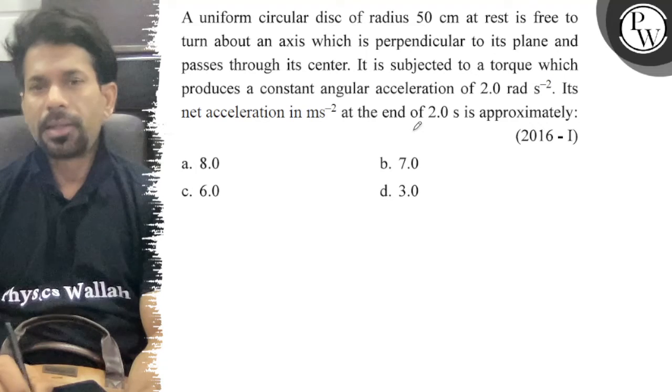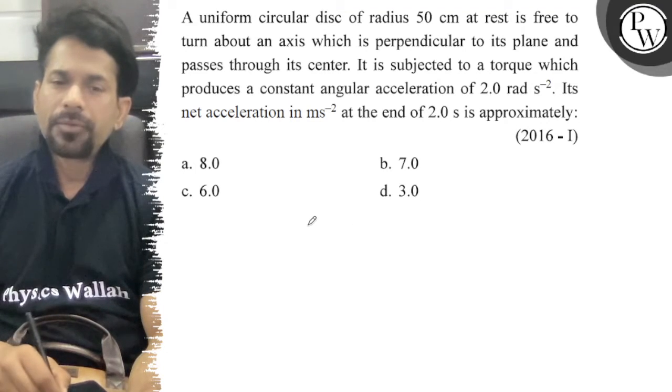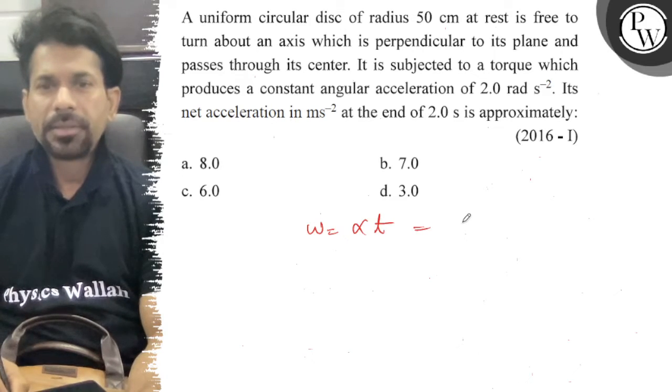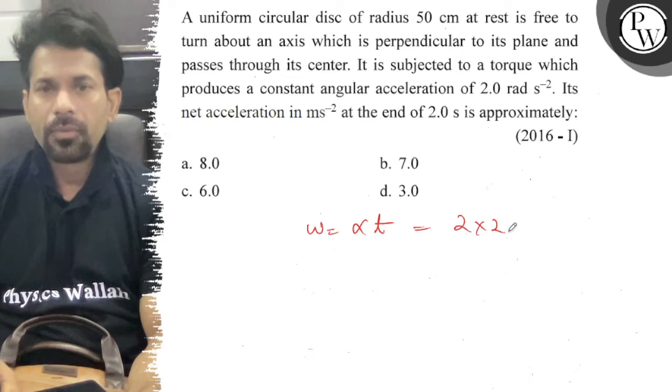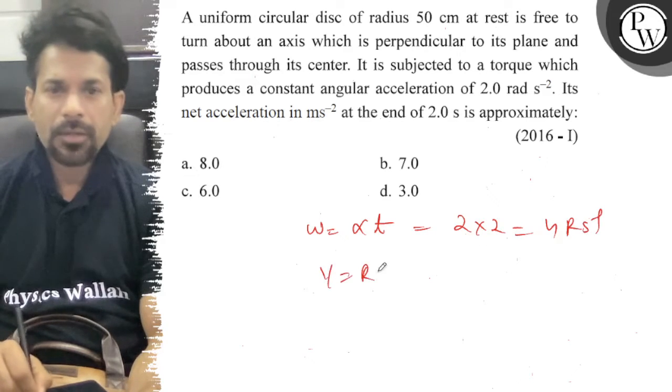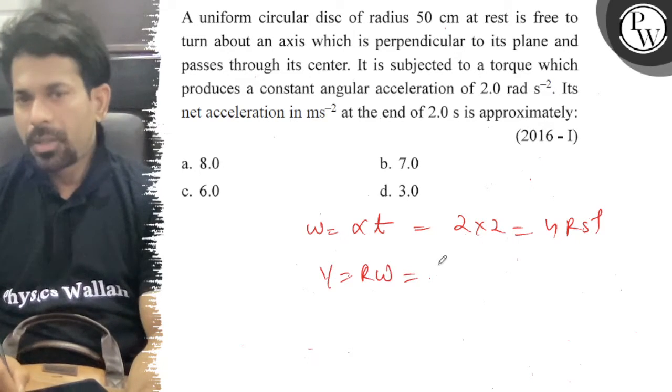At the end of 2 seconds, ω = αt where α is 2 rad/s², so ω = 2 × 2 = 4 rad/s. The velocity v = rω where r is 50 cm or 0.5 meters.